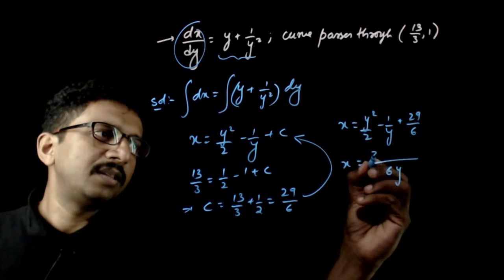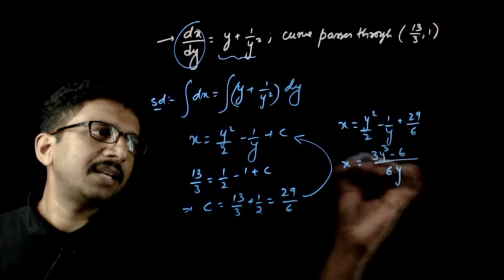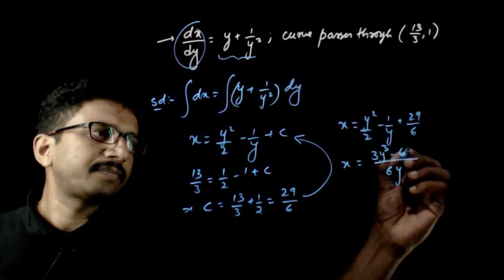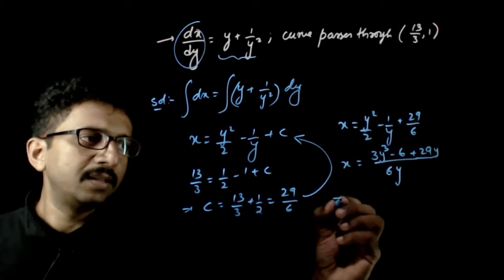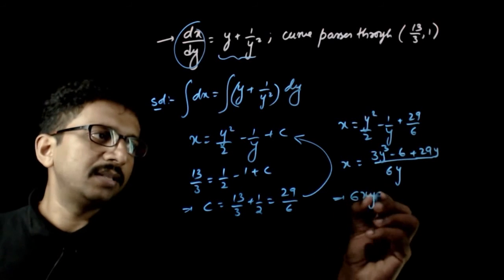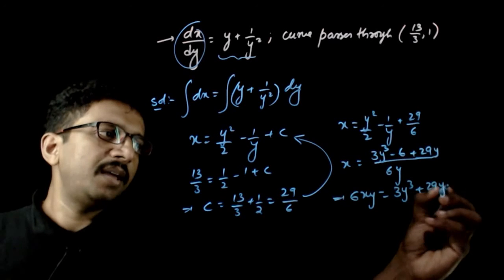You have 3y cube minus 6 plus 29y. This implies 6xy is equal to 3y cube plus 29y minus 6.